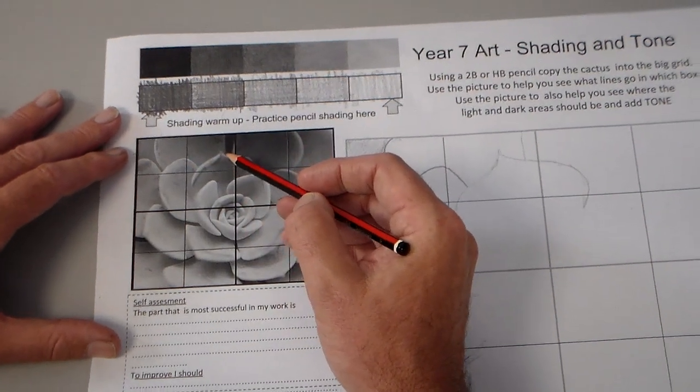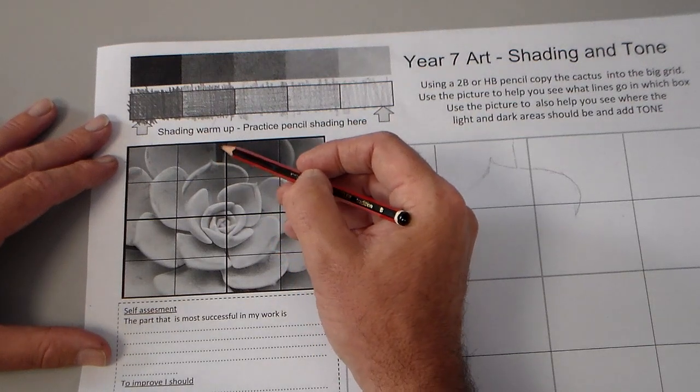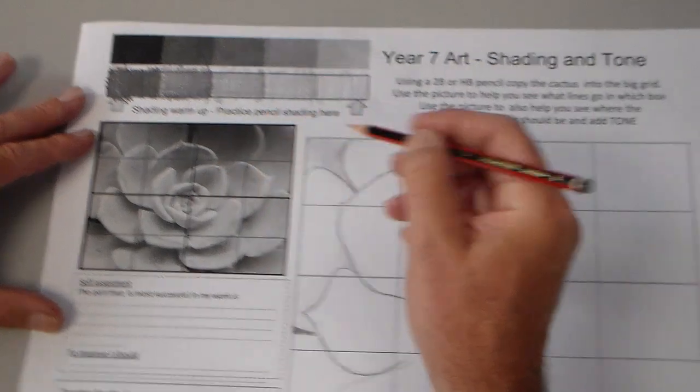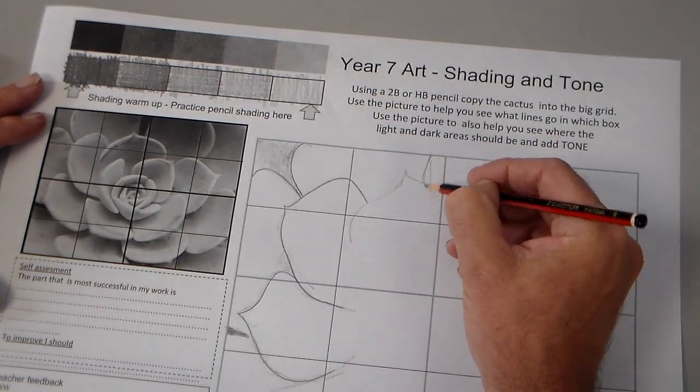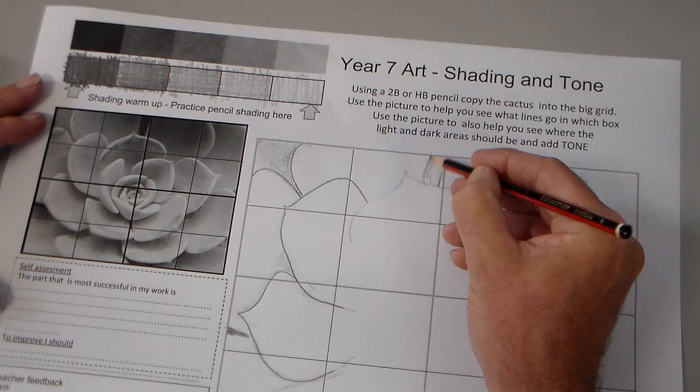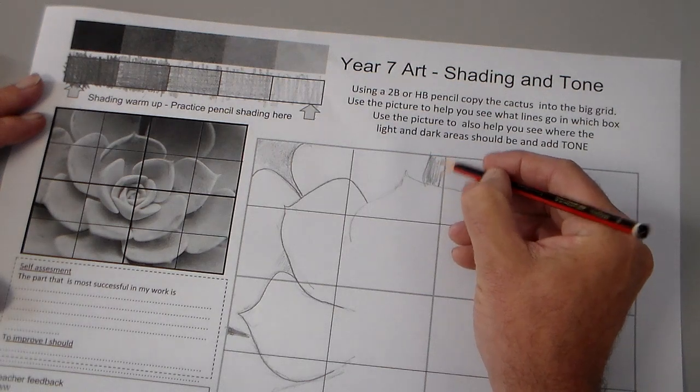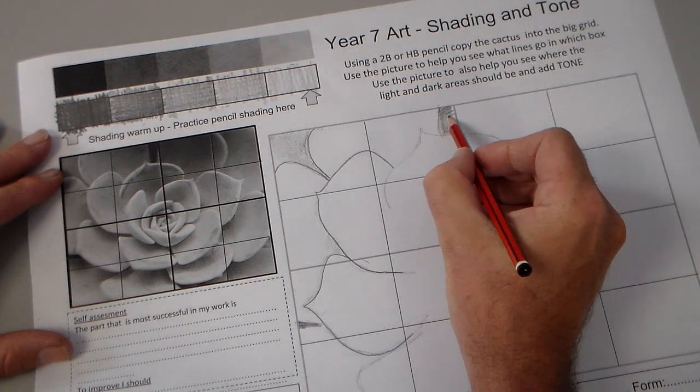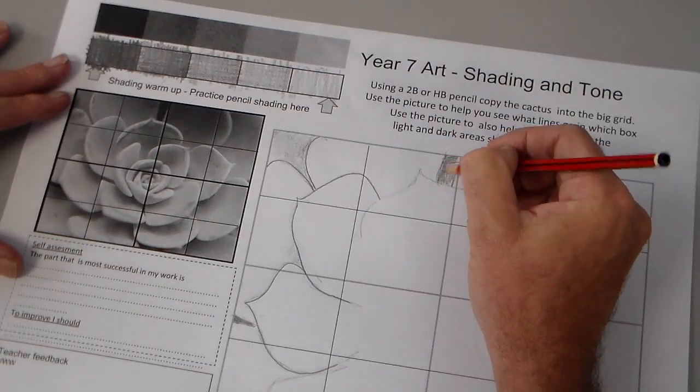If we look into, for example, this grid square here, we've got an area of dark shading which is quite near the edge and comes down here and there. So we can quite quickly add this shade and just sort of map out the areas.